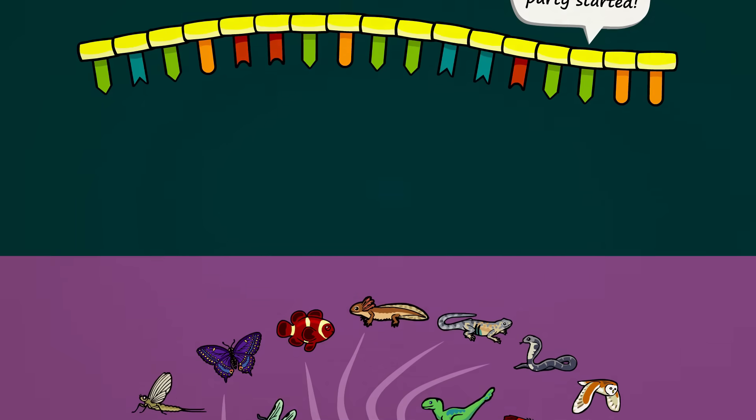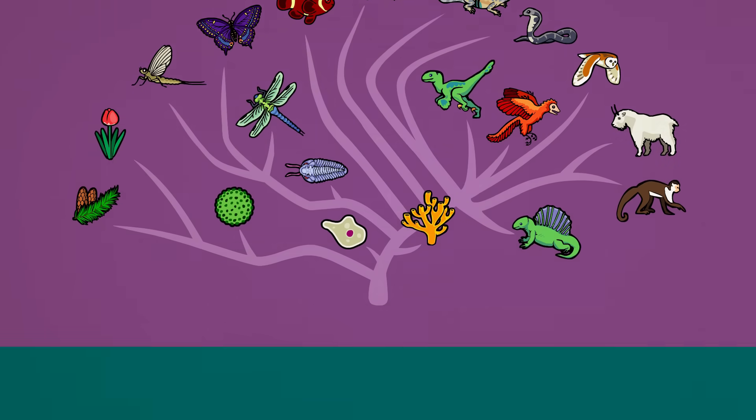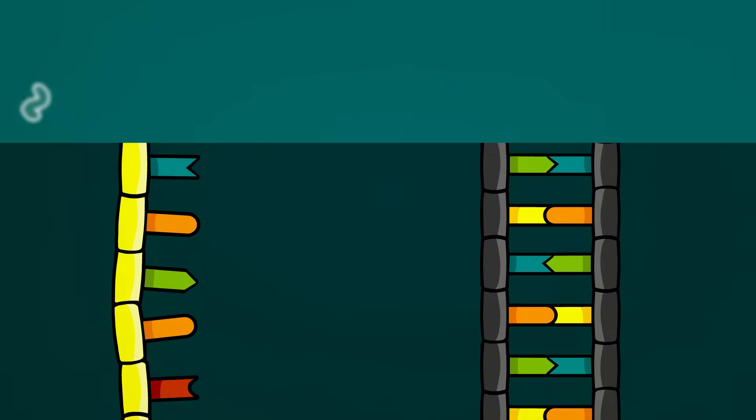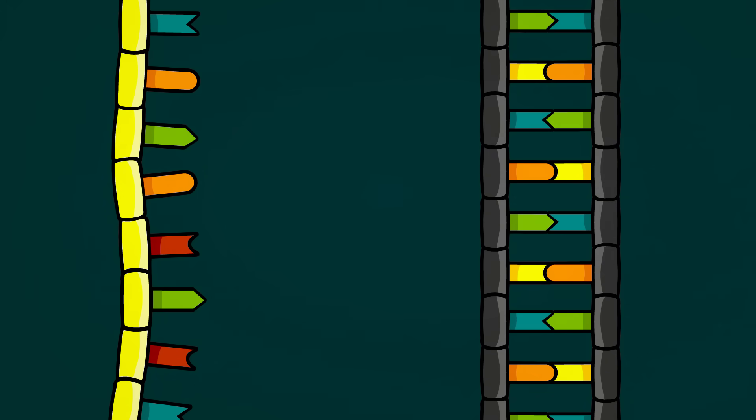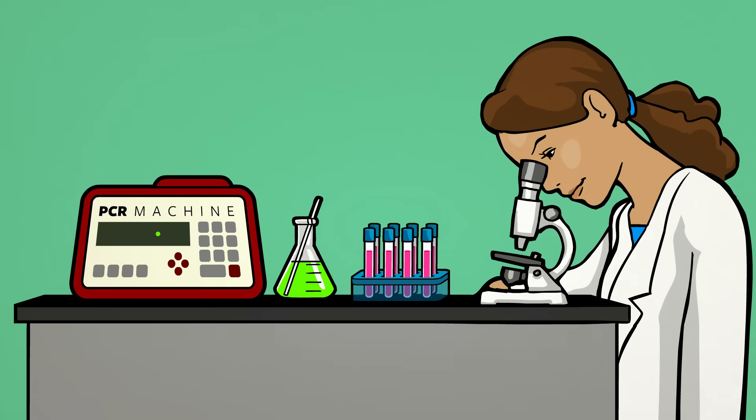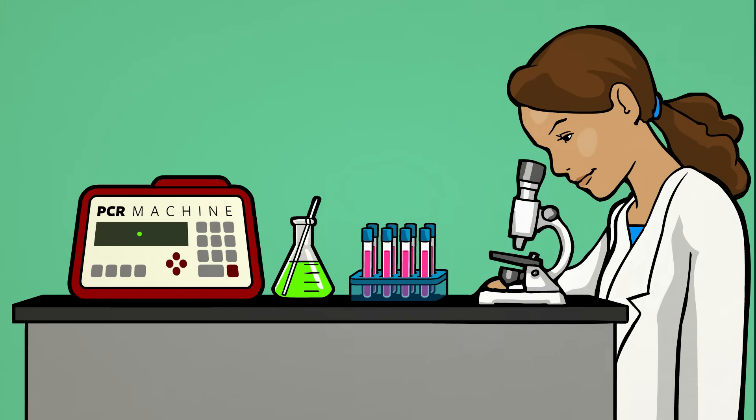RNA is thought to have given rise to life for several reasons. Chains of RNA are found abundantly in all living cells today. RNA is a close chemical cousin to DNA. And with very little help from researchers, RNA chains can replicate, evolve, and interact with their environments.